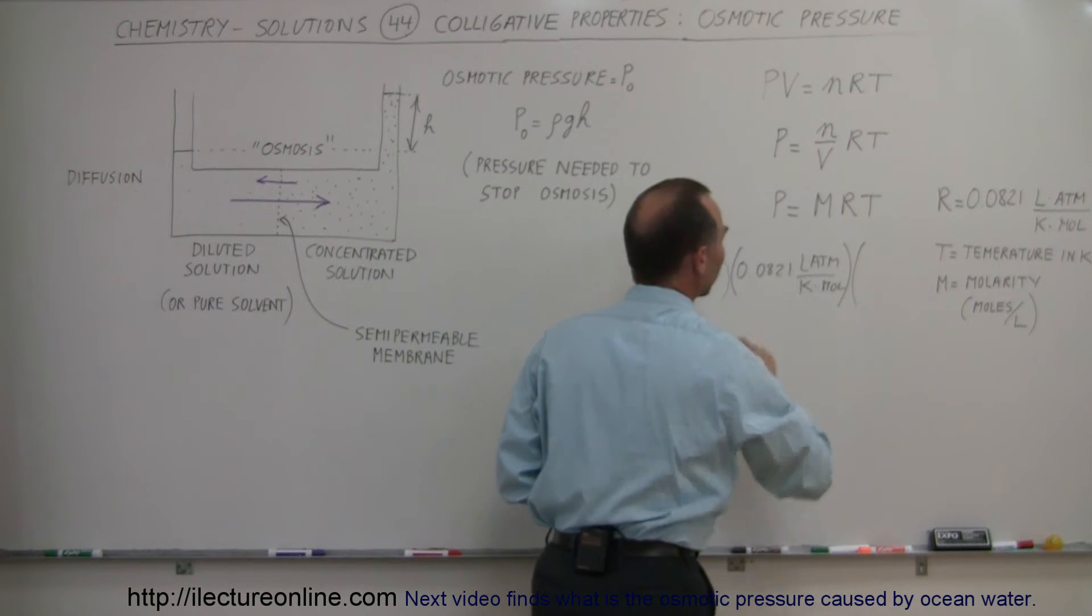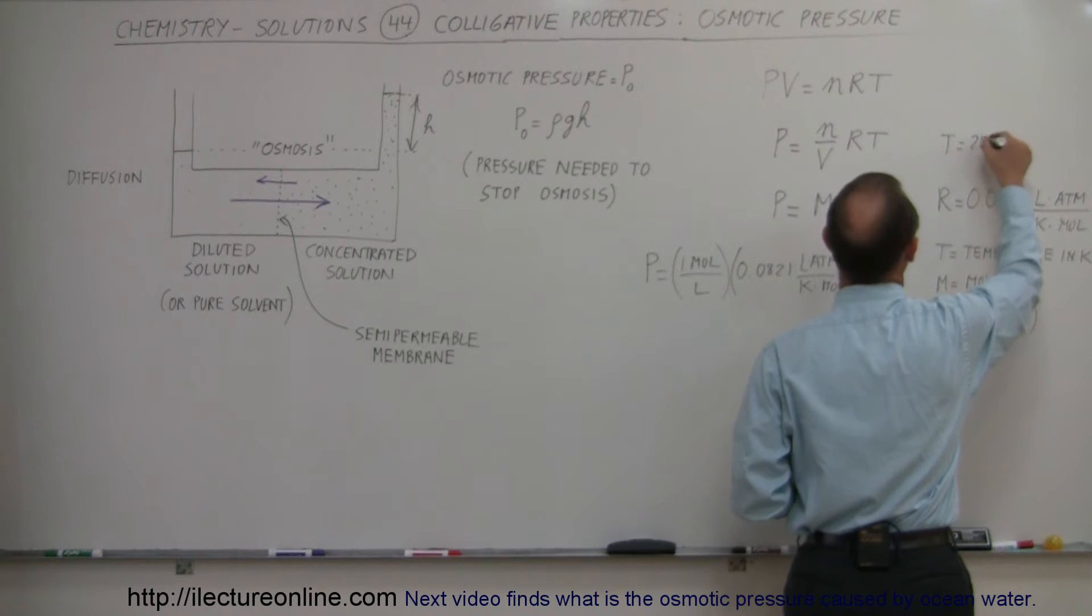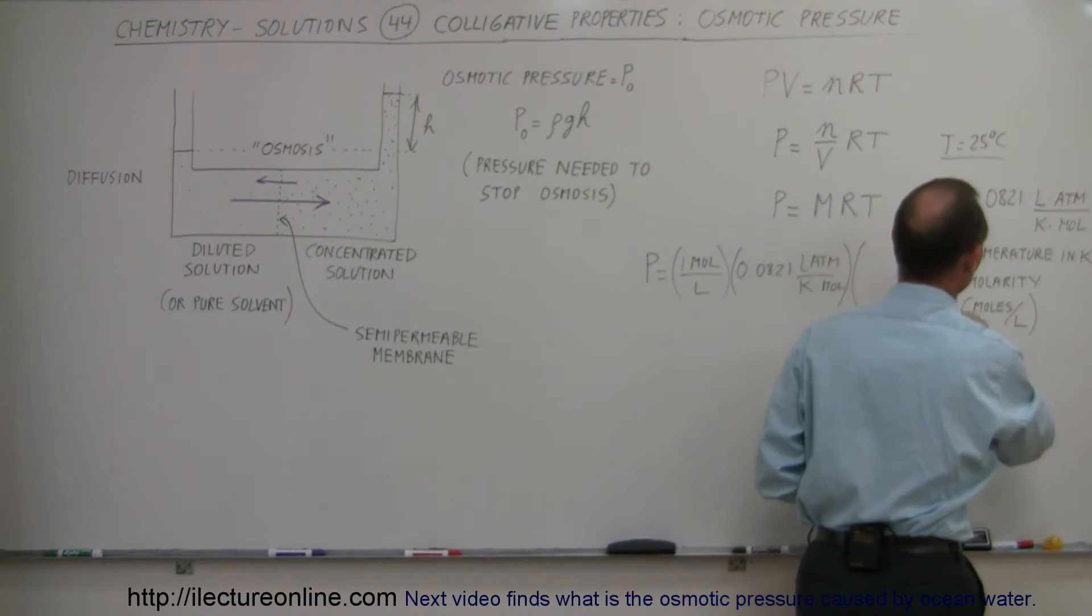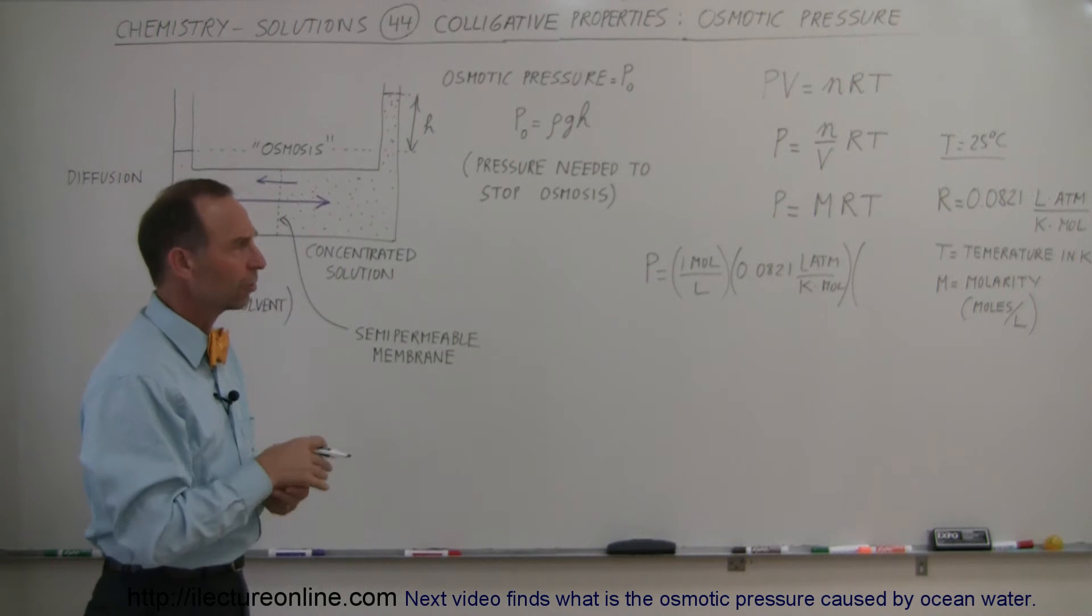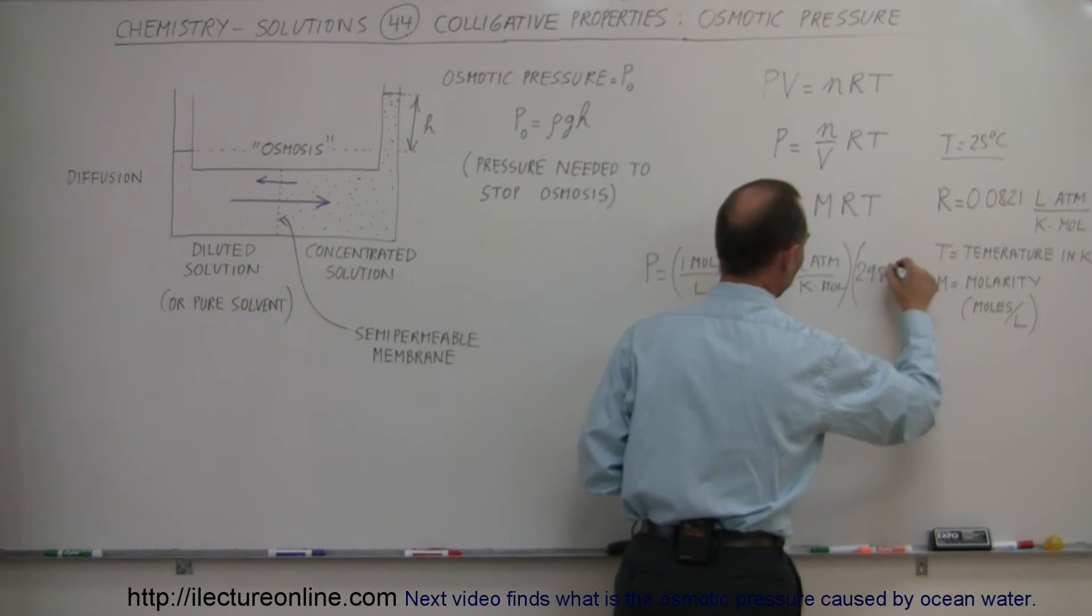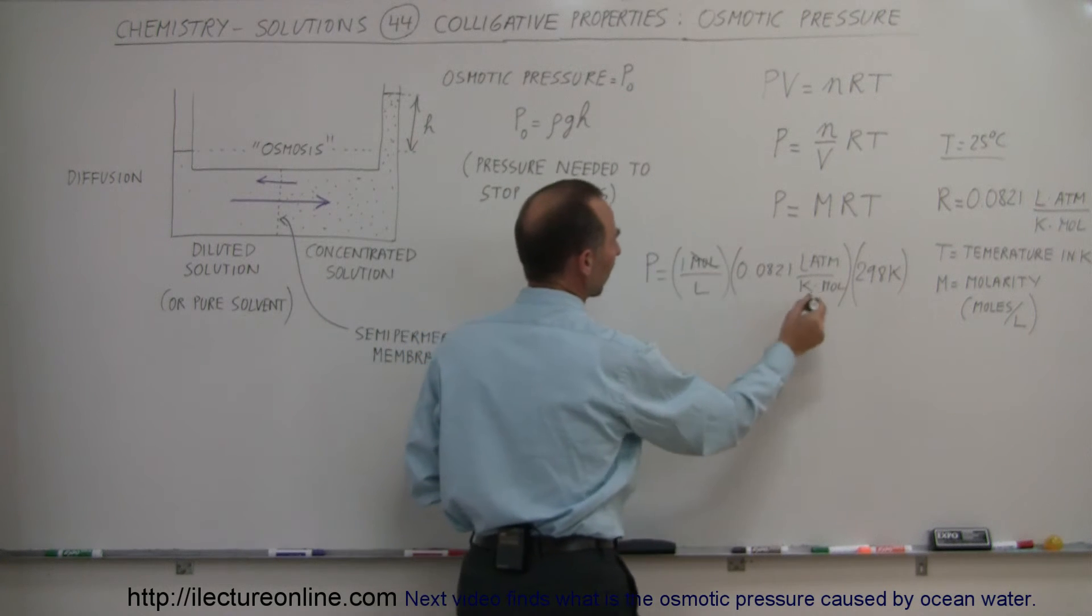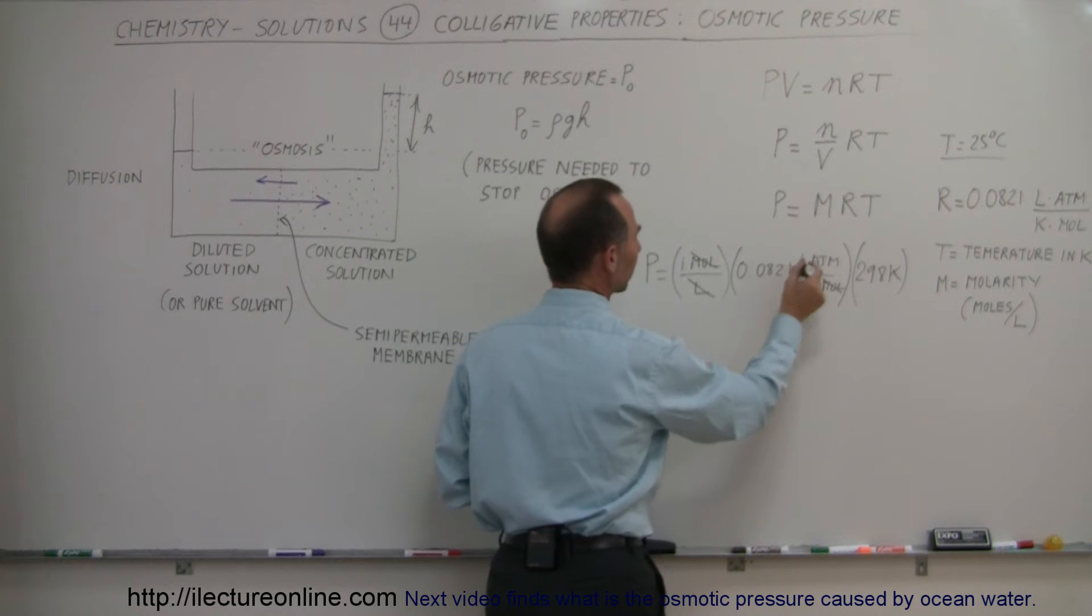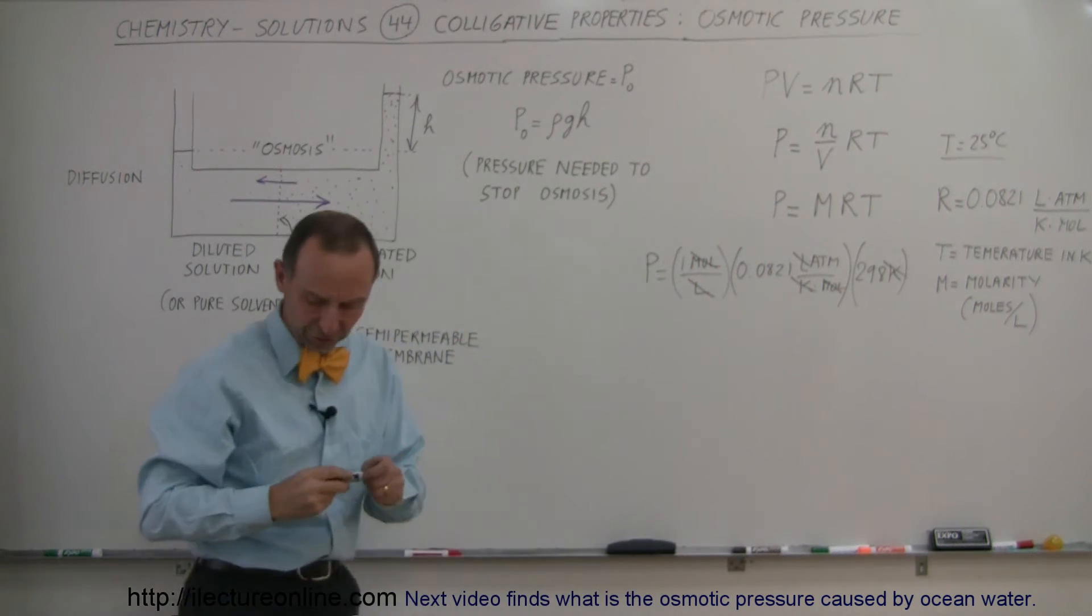And then we multiply times the temperature. Let's pick 25 degrees. So temperature equals 25 degrees centigrade. We have to convert that to Kelvin, so we add 273 to that. 273 plus 25 is 298 Kelvin. Notice unit-wise, the moles cancel out, the liters cancel out, the Kelvin degrees cancel out, and we're just left with atmospheres.